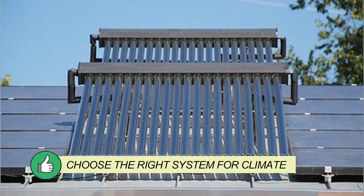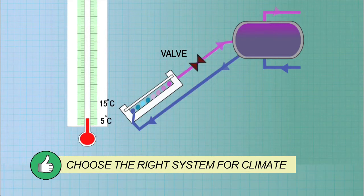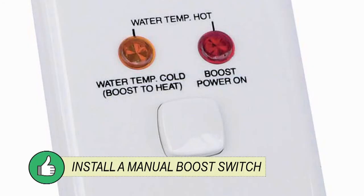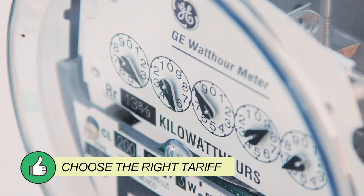So, select the system for the climate and use appropriate temperature controls. Locate the collector and tank to maximise performance. Install a manual boost switch and connect to a tariff which minimises emissions and costs. For more information and to download a fact sheet, go to tradesecrets.org.au